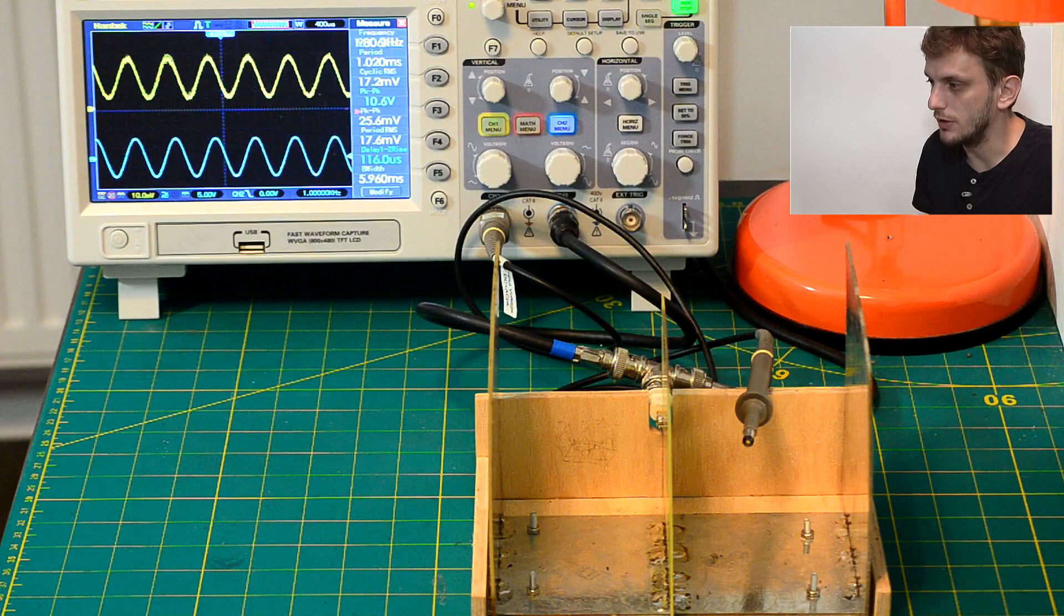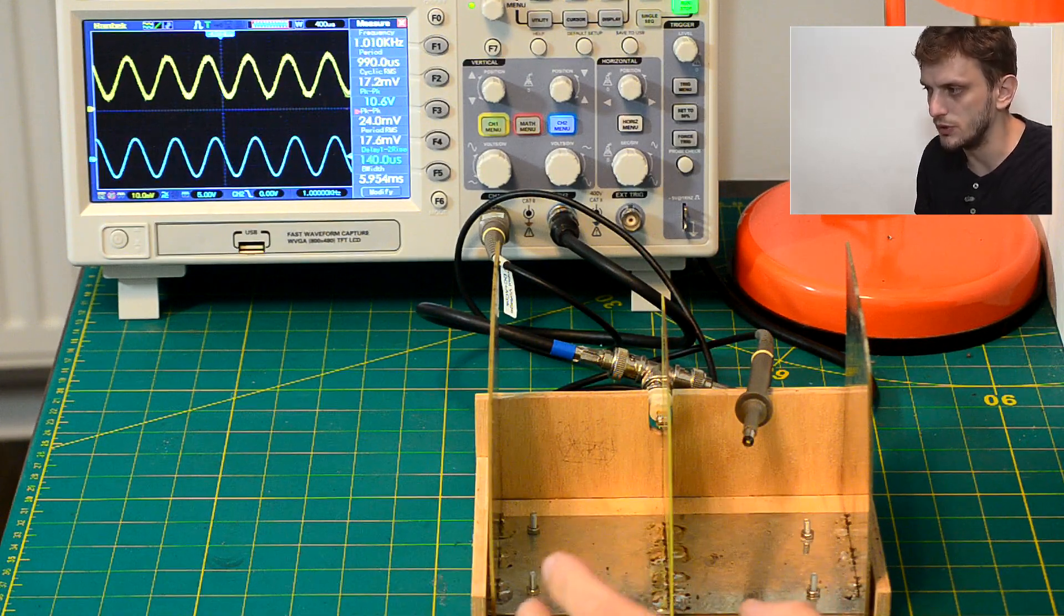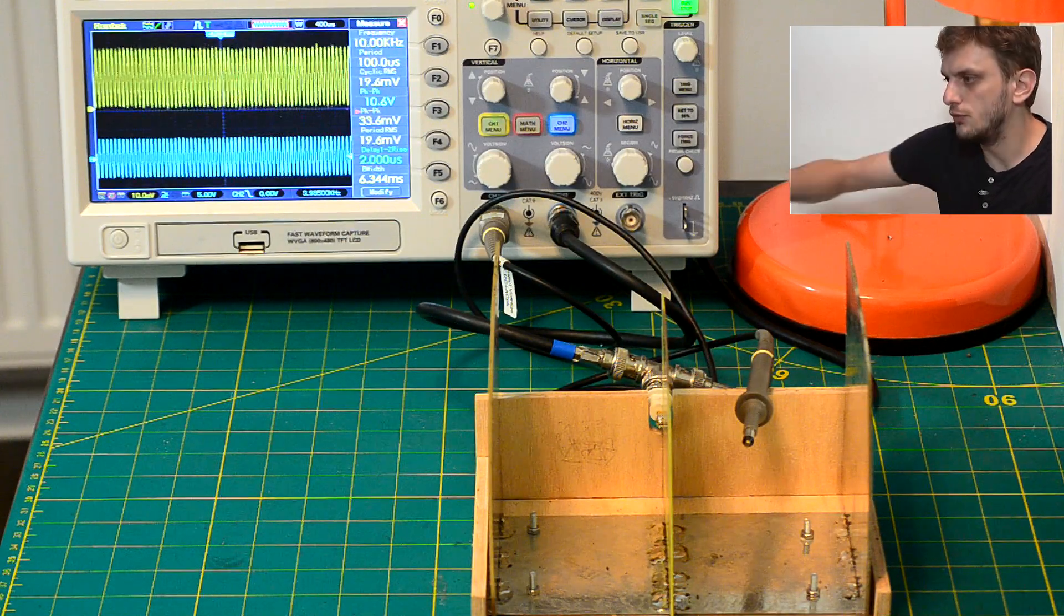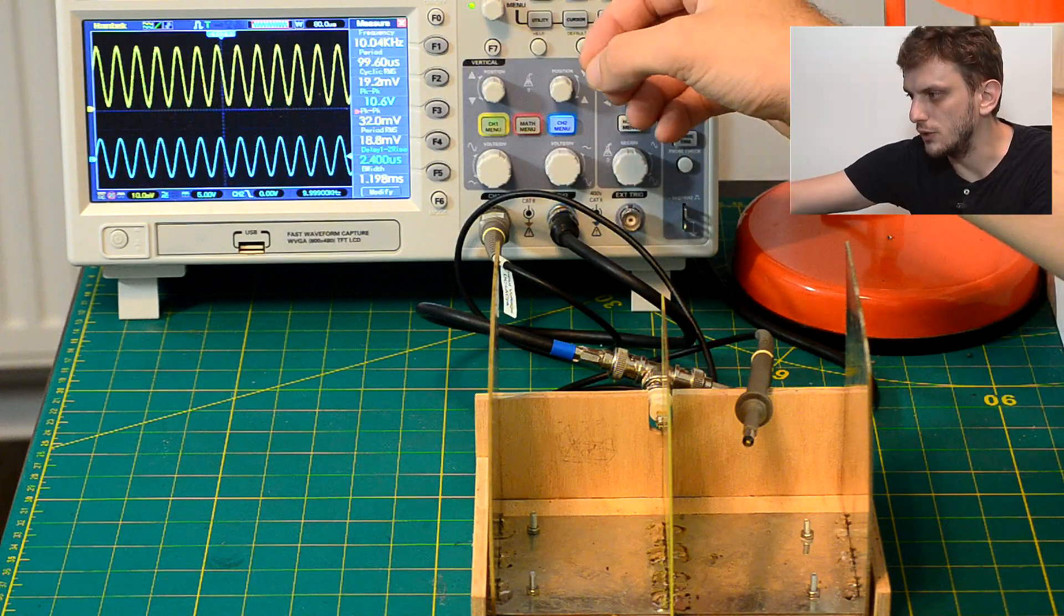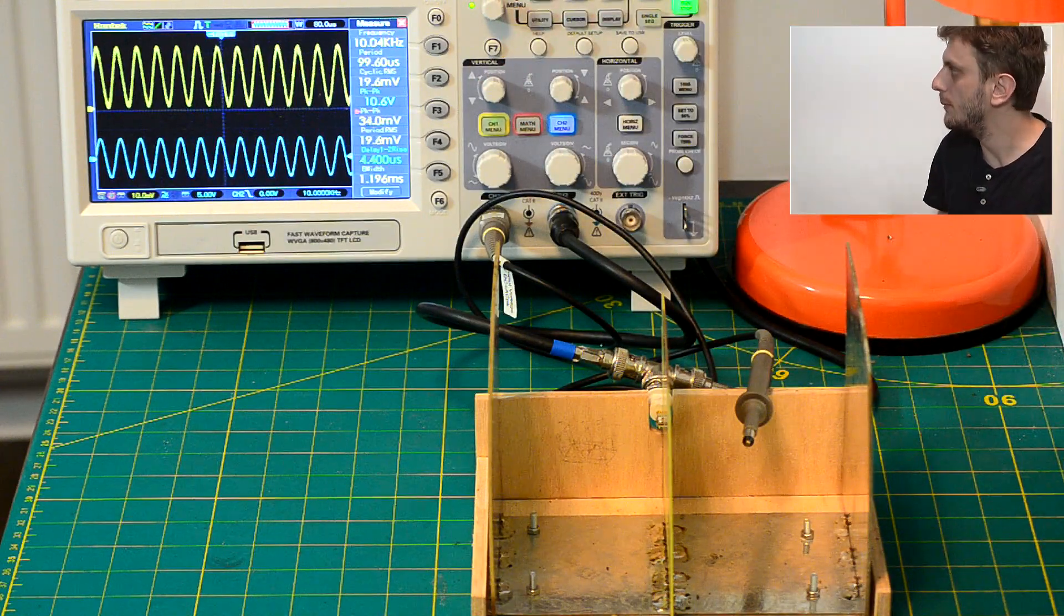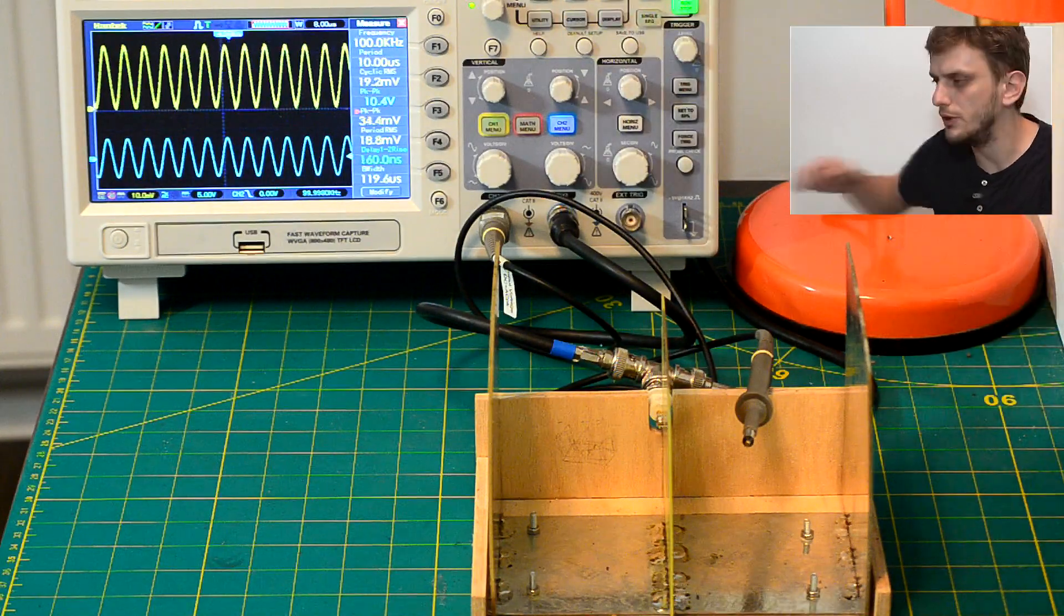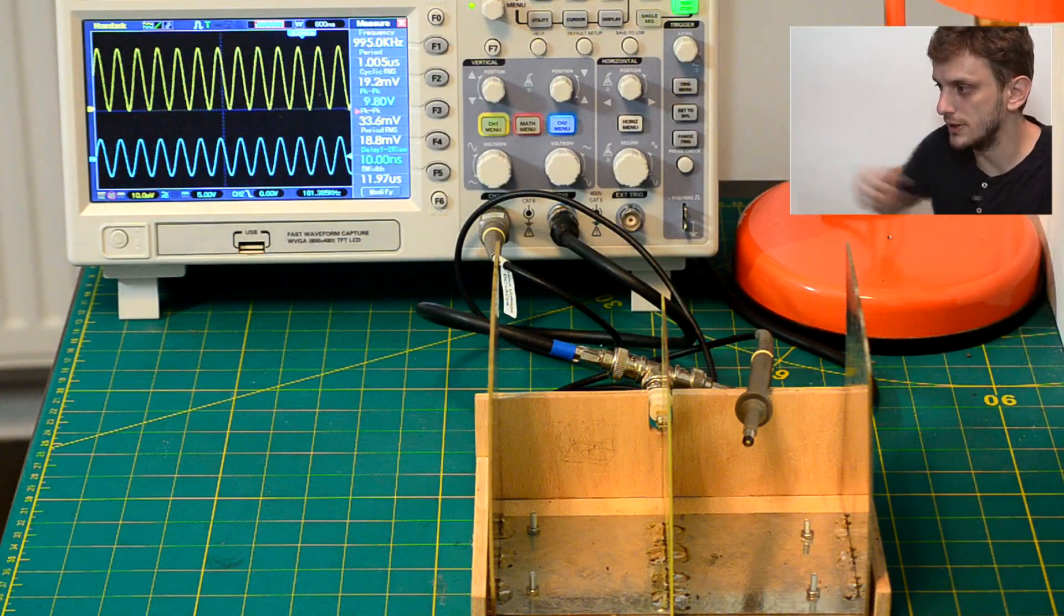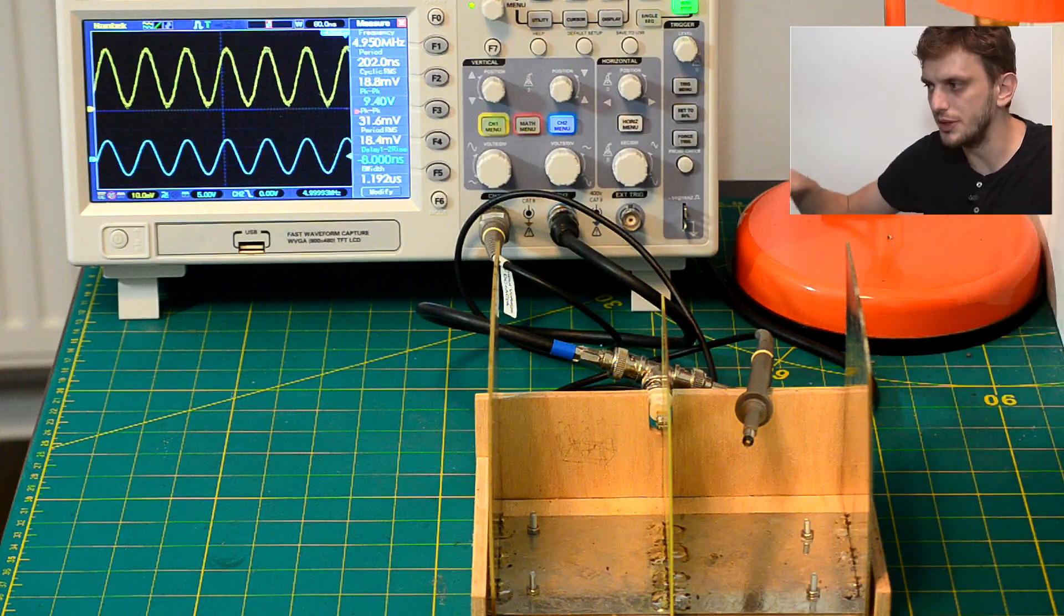Now if we check out my probe we see that at 1 kilohertz it's sensing about 25 millivolts of peak to peak signal. If we increase this to 10 kilohertz well the signal slightly goes up 32 millivolts, 100 kilohertz still around 32 33 millivolts, at 1 megahertz still the same, 5 megahertz still 30 something but my input signal starts to decrease.